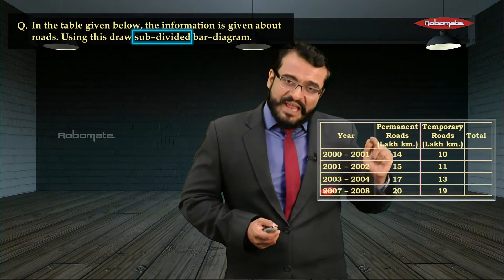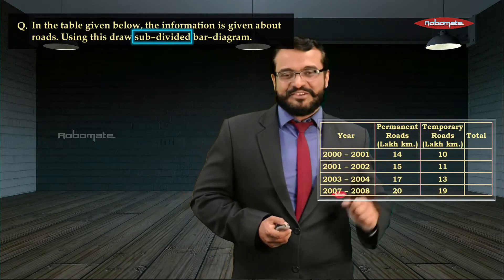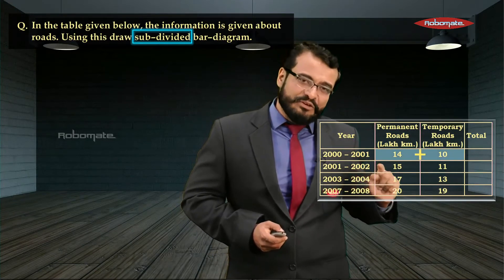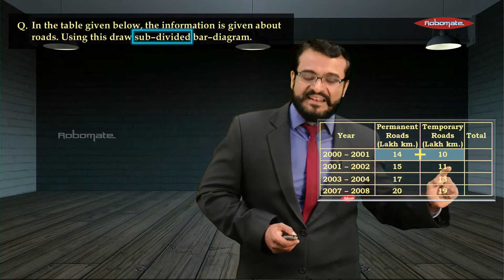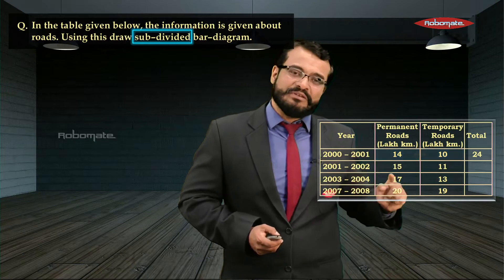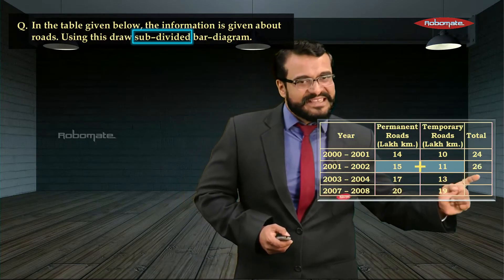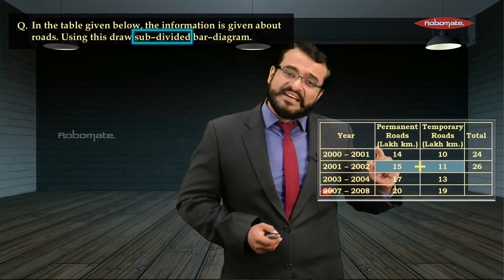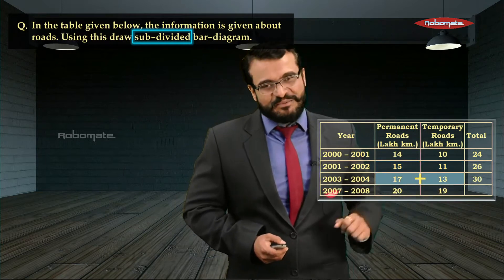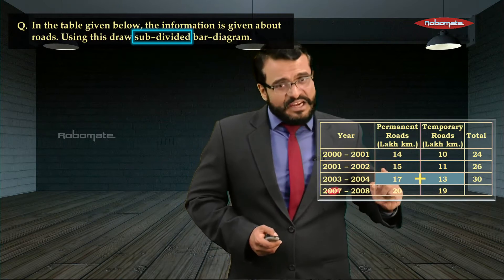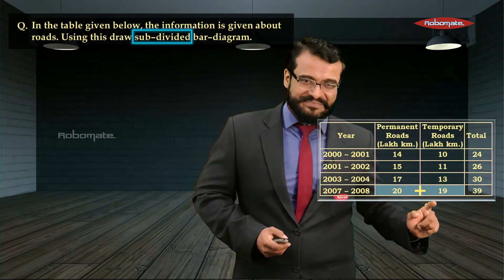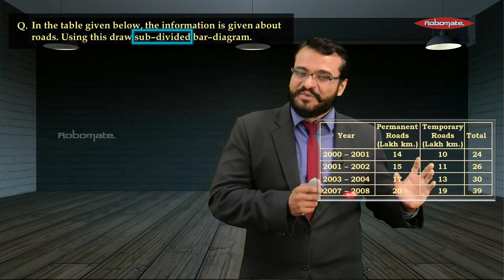We'll add the two values and write the total in a last column. For 2000–2001: 14 + 10 = 24 lakh km. For 2001–2002: 15 + 11 = 26 lakh km. For 2003–2004: 17 + 13 = 30 lakh km. For 2007–2008: 20 + 19 = 39 lakh km.